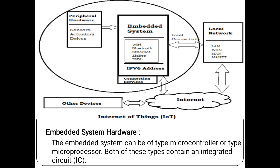Embedded system hardware consists of peripheral hardware, sensor, actuator and driver, embedded system, IPv6 address, and local network. Through this, the data are transferred through the internet to other devices. That is IoT — Internet of Things.